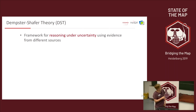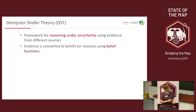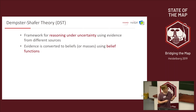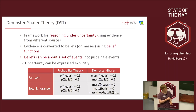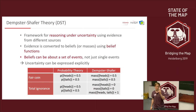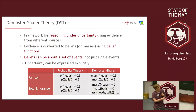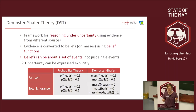The idea was to use Dempster-Shafer's theory of evidence to fuse these different sources of evidence and explicitly consider the uncertainty. It's basically a framework for reasoning under uncertainty. Evidence is converted to beliefs, or masses, using belief functions — similar to probabilities but not quite. The key difference is that beliefs can be about a set of events, not just single ones. So you can represent total ignorance: in probability theory you'd assign 50-50 to a coin flip; in Dempster-Shafer theory you'd assign 0% to heads, 0% to tails, and 100% to 'heads or tails.'